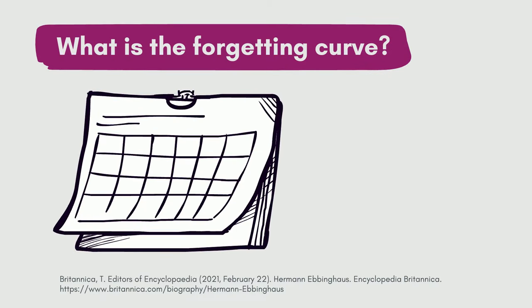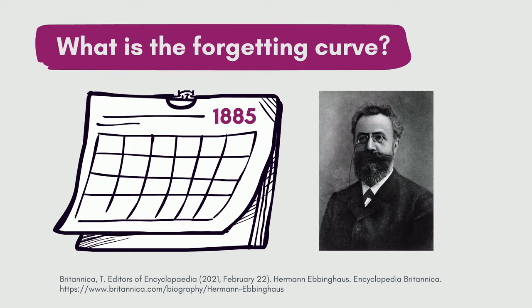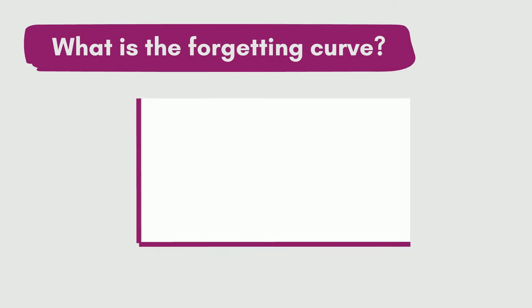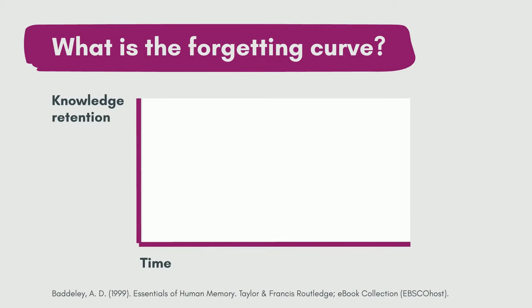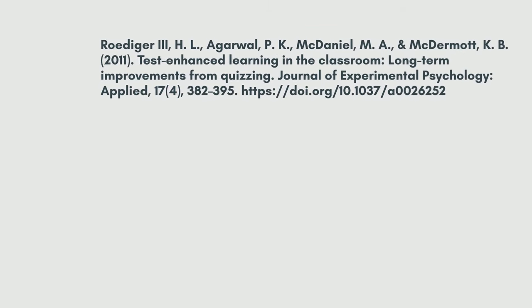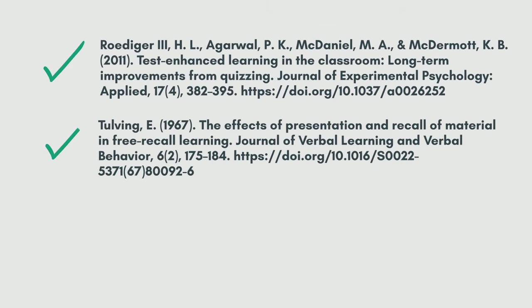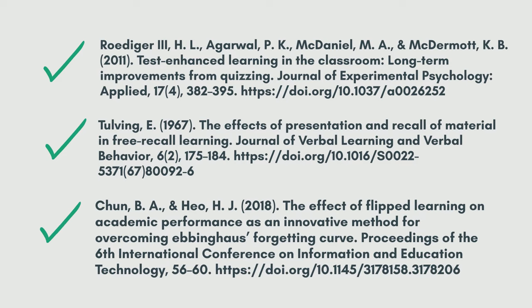Over a hundred years ago, in 1885, scientist Herman Ebbinghaus first introduced the concept of the Forgetting Curve as part of his research into the process of learning and forgetting. What the curve demonstrates is that you forget information very quickly when you first learn it, but the information loss tapers off over time. This trend has since been validated by modern neuroscience in several different studies.